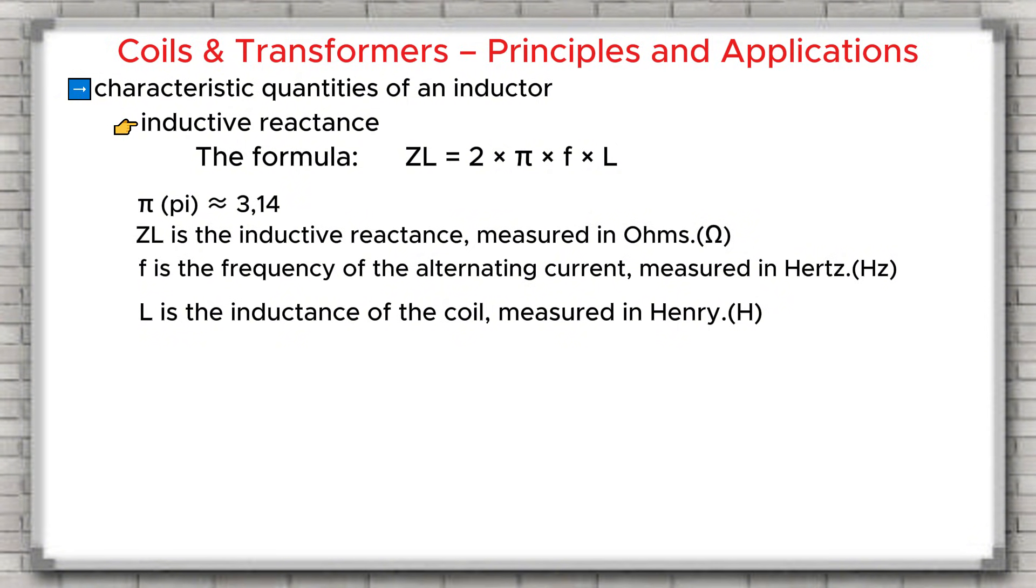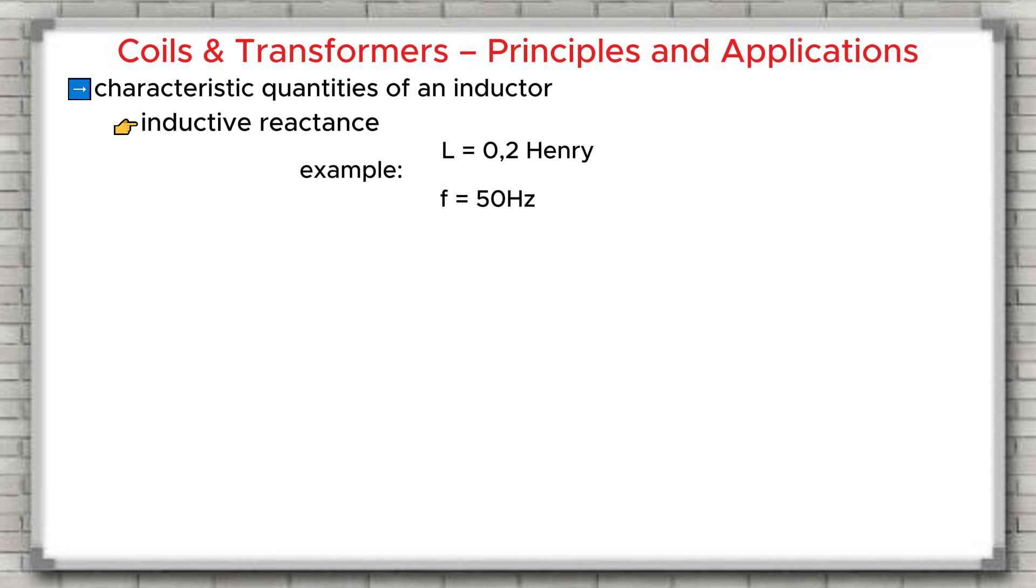Now let's see what happens when we change the values. If frequency F increases or if inductance L increases, then inductive reactance ZL also increases. If frequency F equals zero, which means direct current, then ZL equals zero. That means the coil has no inductive reactance with DC. Let's look at a specific example. Suppose the coil has an inductance L of 0.2 Henry, and the alternating current has a frequency F of 50 Hertz. We calculate ZL equals 2 multiplied by 3.14 multiplied by 50 multiplied by 0.2 equals 62.8 ohms. So, at a frequency of 50 Hertz, the inductive reactance of the coil is 62.8 ohms.